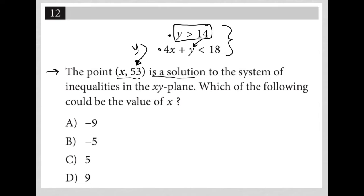Let me keep reading to see if I need any more information. The point x comma 53 is a solution to the system of inequalities in the xy plane. Which of the following could be the value of x?